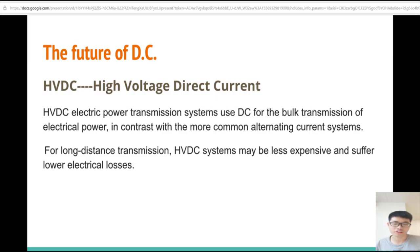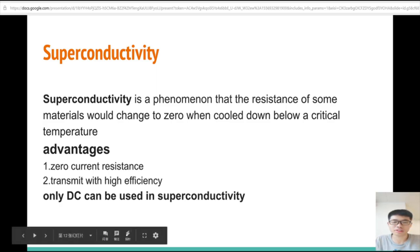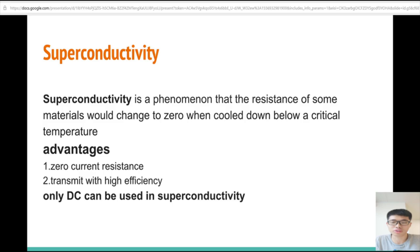Next, we discuss superconductivity. Superconductivity is a phenomenon that the resistance of some materials would change to zero when cooled down below a critical temperature. When first discovered, the critical temperature was very low, approaching absolute zero. But with time going on, the critical temperature is much higher than before. We can imagine that in the future, we have room temperature superconductors. When using these materials, only DC can be transmitted, because AC will generate a magnetic field which will cause the loss of power.